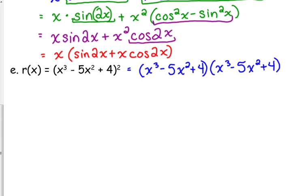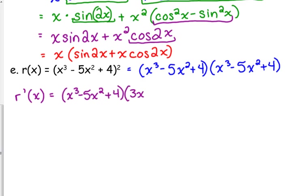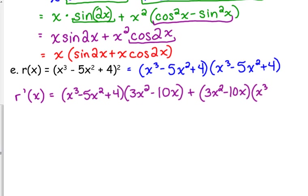Let's apply our product rule — r prime of x. Get in the habit of using this notation because you need to know what you're writing. The product rule says take the first and multiply it by the derivative of the second. The derivative of the second term using the power rule is 3x squared minus 10x. Plus the derivative of the first, which is also 3x squared minus 10x — it's the exact same expression.